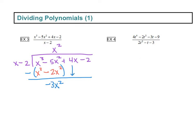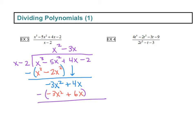Now we're going to bring down just one term — that plus 4x is coming down. Again we look at the first terms: x times what gives us negative 3x squared? I need to multiply by negative 3 to get that negative 3, and I need another x to get to x squared. So minus 3x. Then we multiply: negative 3x times x is negative 3x squared, and negative 3x times negative 2 is positive 6x. Then we subtract that second polynomial, and negative 3x squared minus negative 3x squared cancels.